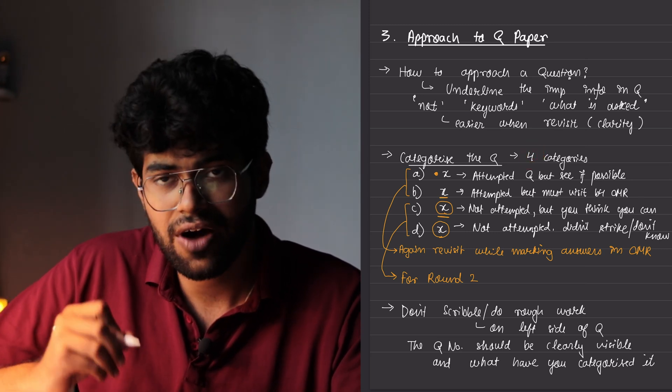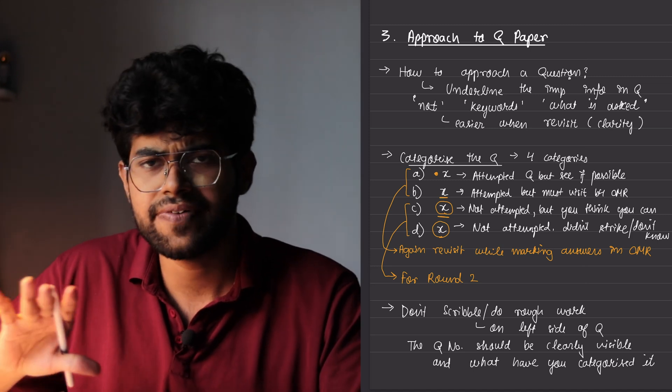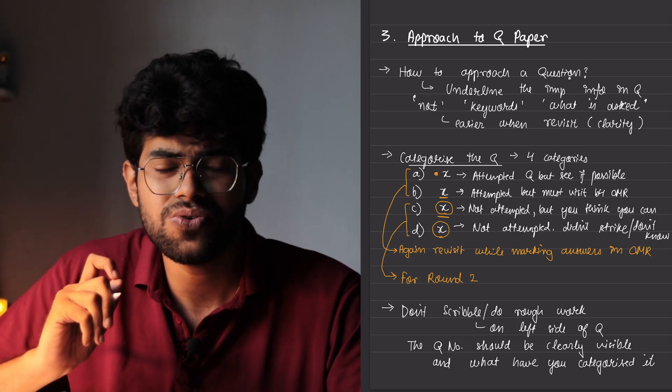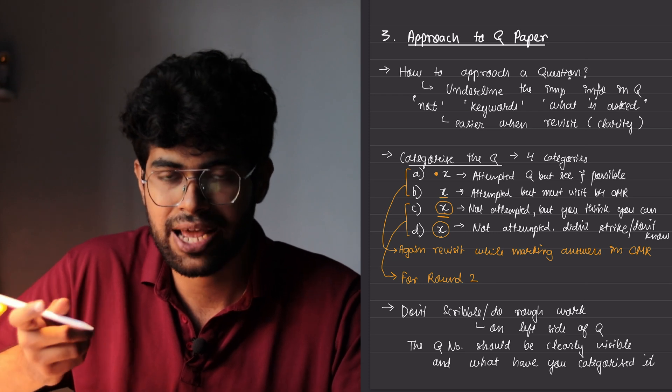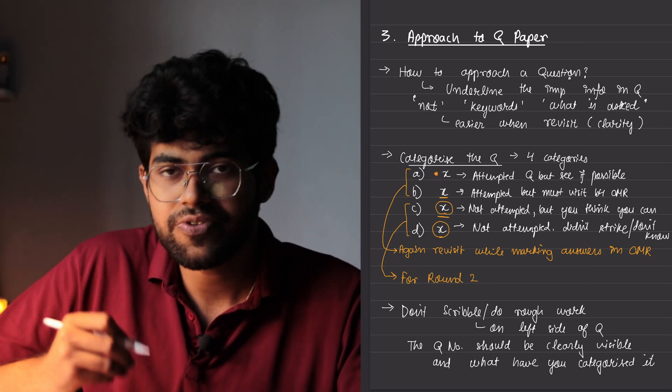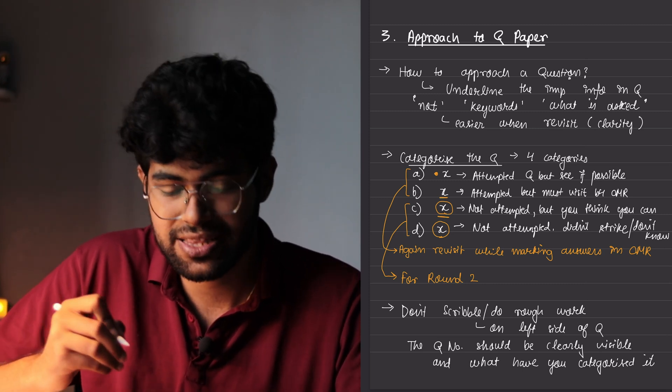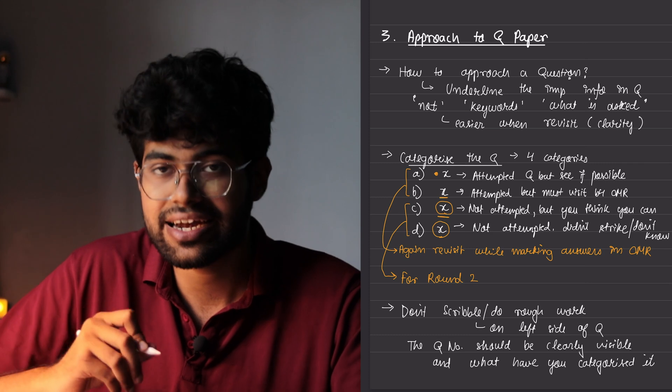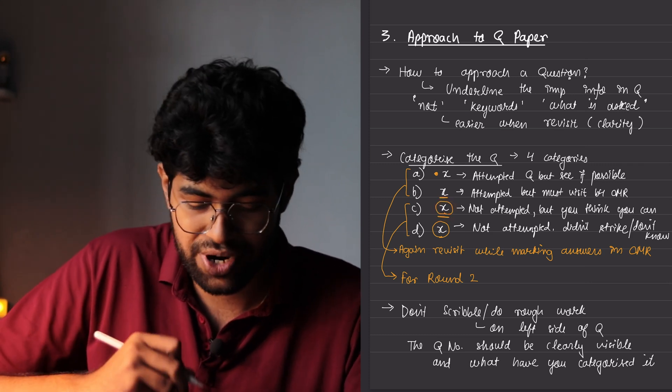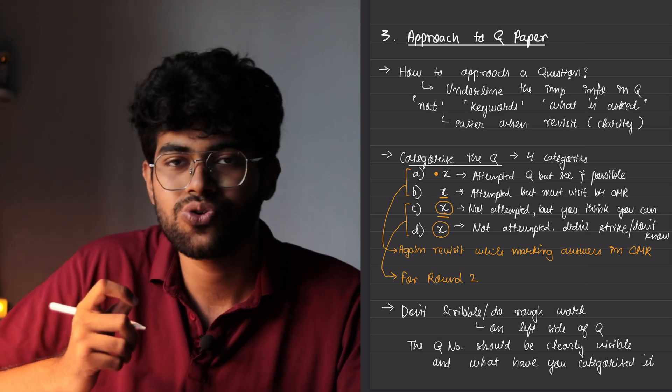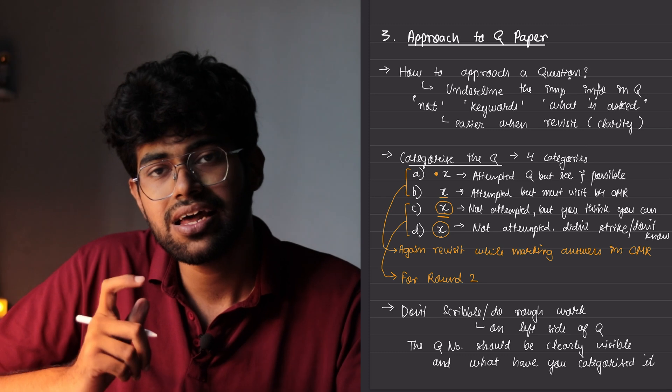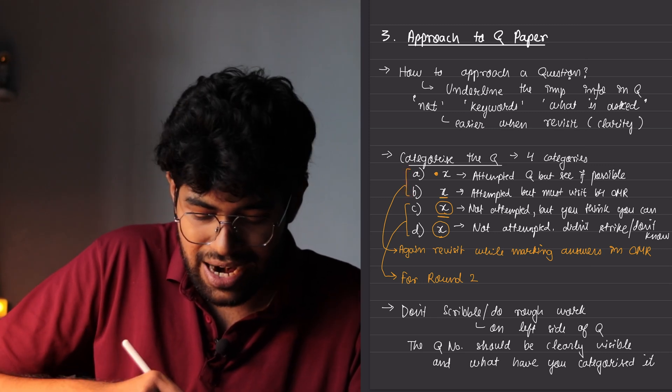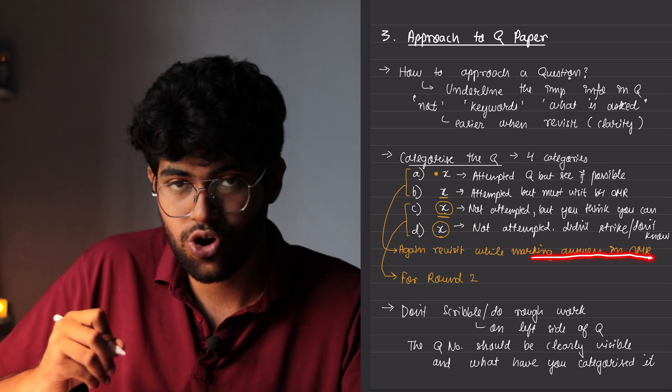So there are four categories of how to categorize the questions in the question paper. Firstly, if you have attempted it and if you are confident, just leave it as it is. If you have attempted the questions but you have a slight doubt and you want to revisit once if the time permits before marking, just put a dot in front of the question. Now, if you have attempted but you think that you must visit this question again before marking this, then just underline below the question. Now, if you have not attempted the question but you think that you can easily attempt it later, then just put a circle and underline below it. And if you have not attempted the question and nothing is striking or you don't know the question, then just encircle it. This basically will give you an idea in round two, which questions to do in the first priority. So the first two A and B categories are to be again revisited while marking the answers in the OMR sheet. Okay.